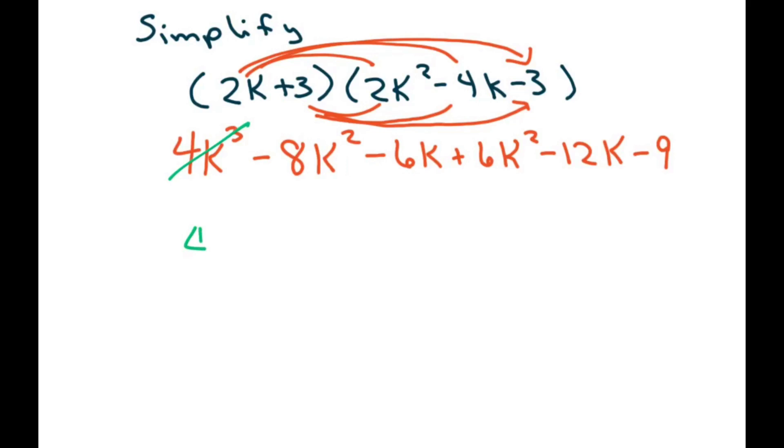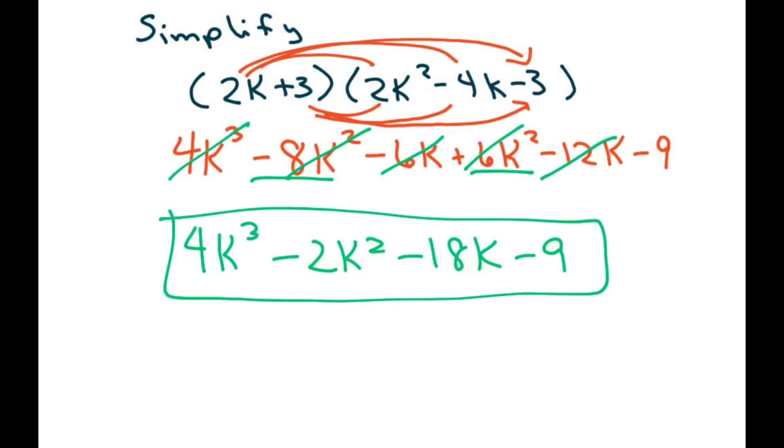So that's the 4k cubed. Collect like terms. That's going to be minus 2k squared. And it's going to be minus 18k for these two. Minus 9. And you just got through simplifying. And that's all. Thank you. Have a very nice day. Bye-bye.